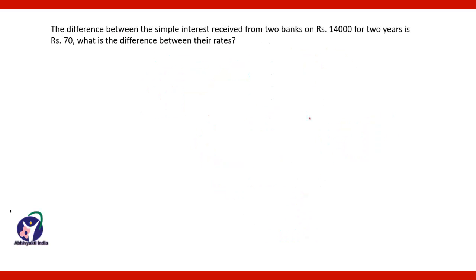Here is another question on simple interest. The difference between the simple interest received from 2 banks on Rs 14,000 for 2 years each is Rs 70. What is the difference between their rates? The simple interest in the first case will be PTR1 by 100, and in another case will be PTR2 by 100.